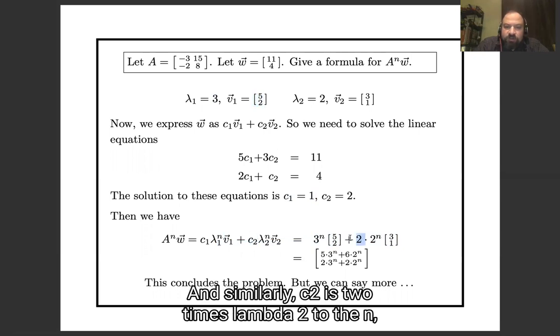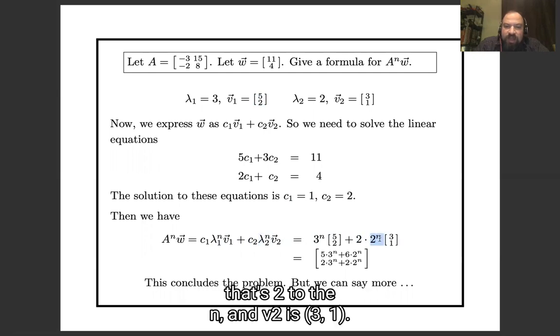And similarly, c₂ is 2 times λ₂ to the n, that's 2ⁿ, and v₂ is [3, 1].